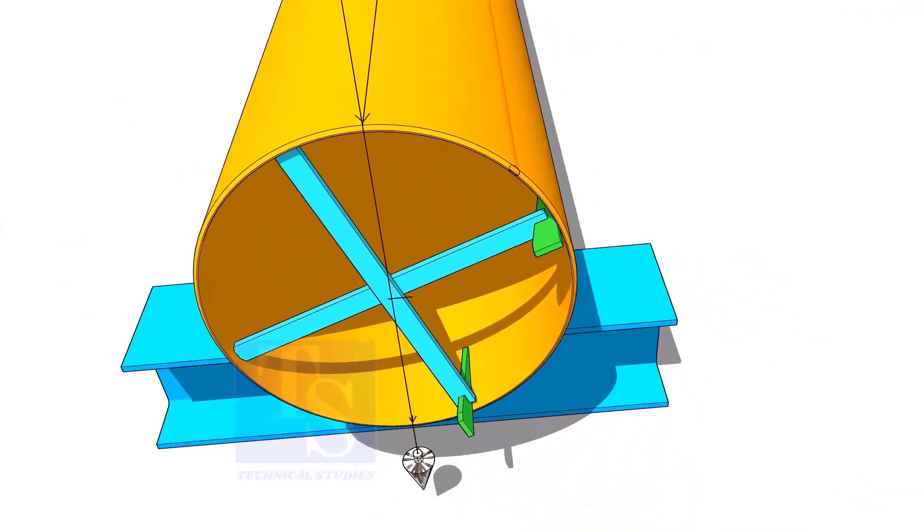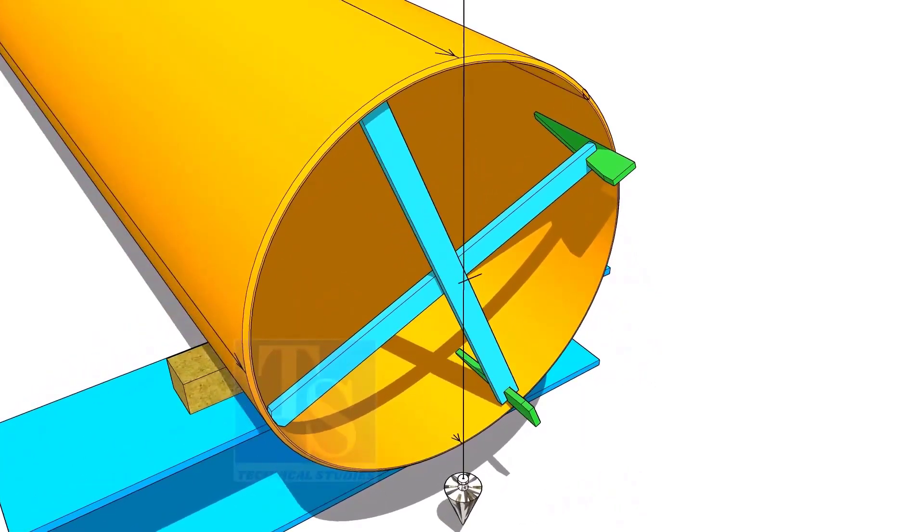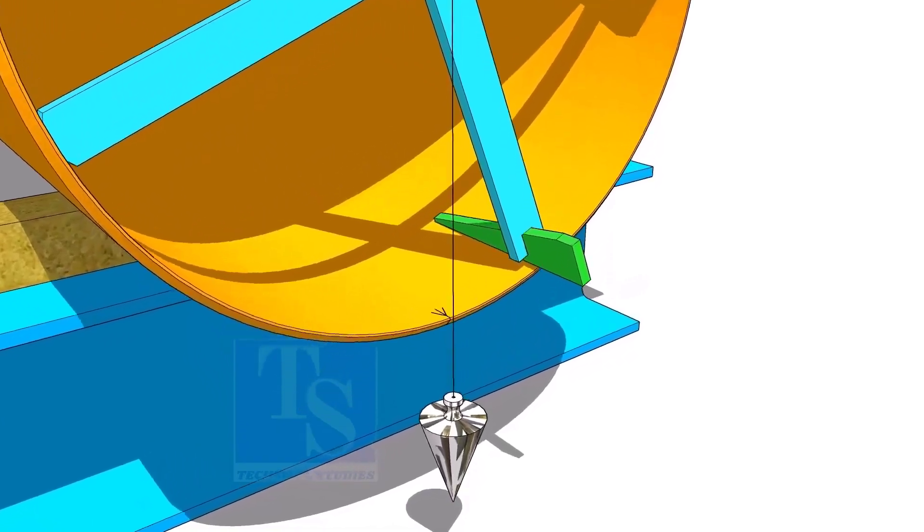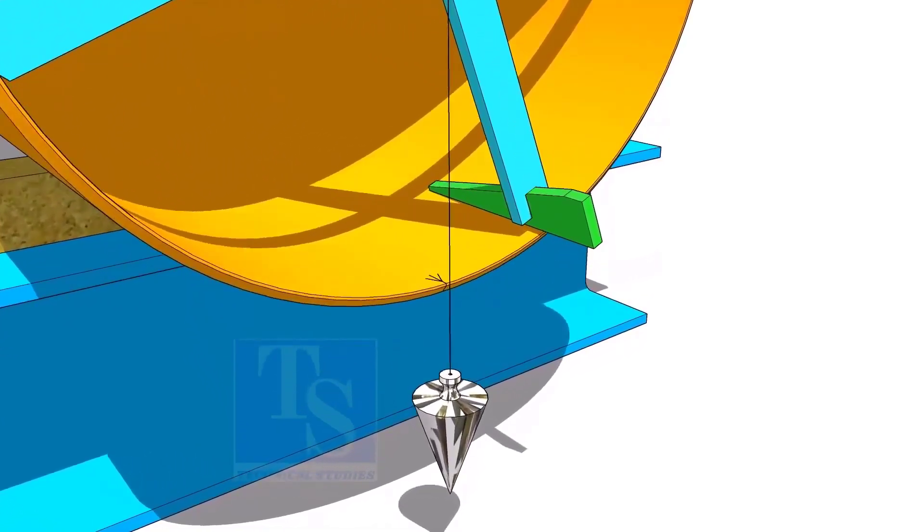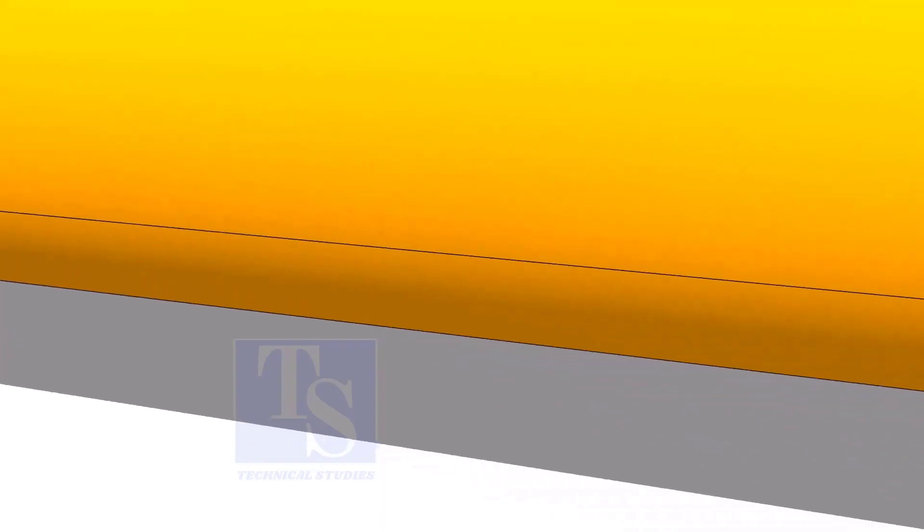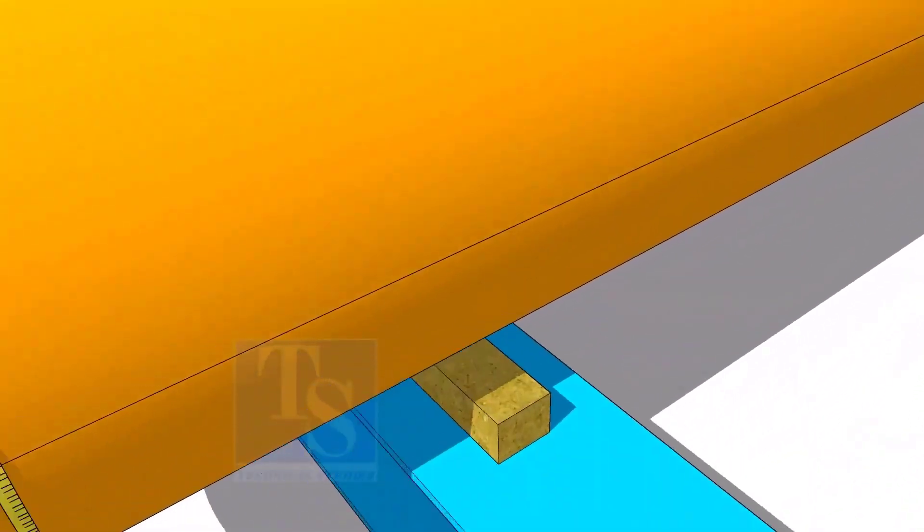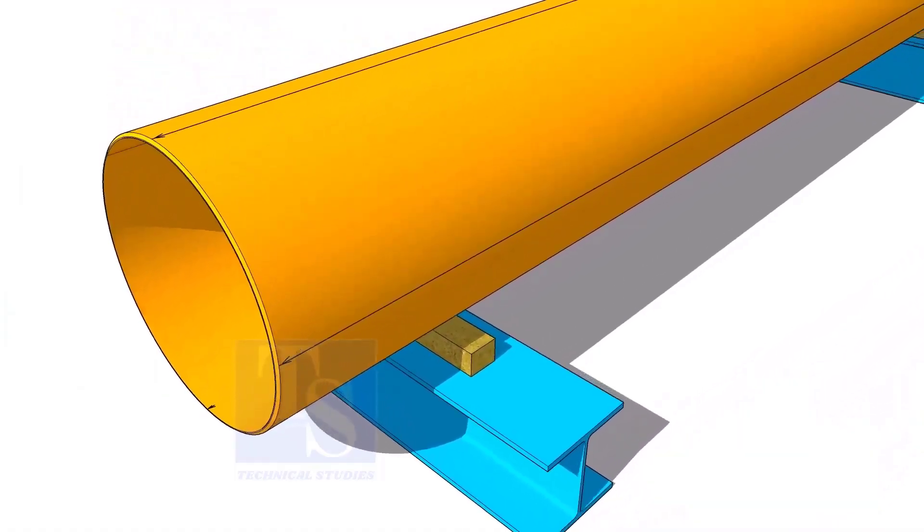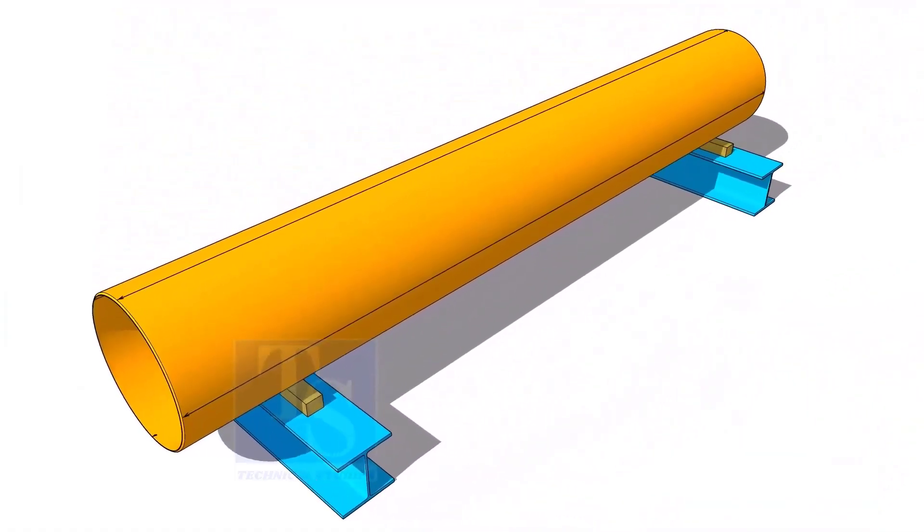Put the plumb on the top side line. If the string passes through the line on the bottom, the lines are correct. Thank you for watching. Congratulations.